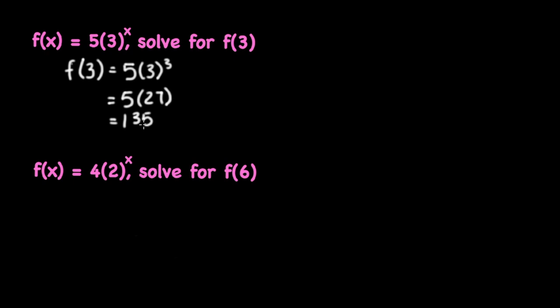In our second example, we have f of x is equal to 4 times 2 to the x and we're asked to solve for f of 6. Again, we have to plug in 6 for any x value in the equation. That's going to give us f of 6 is equal to 4 times 2 to the sixth.